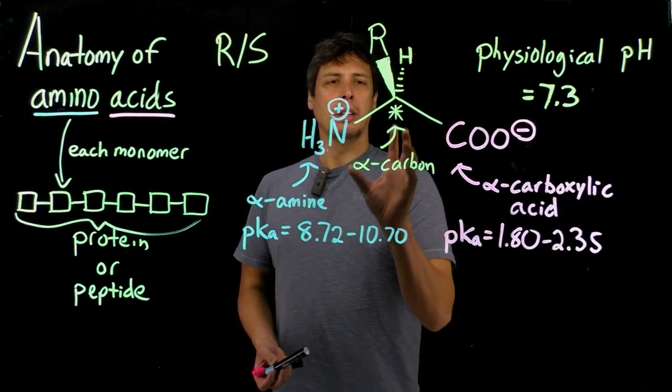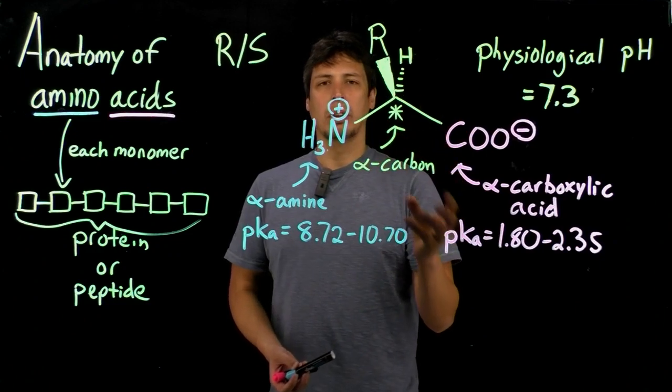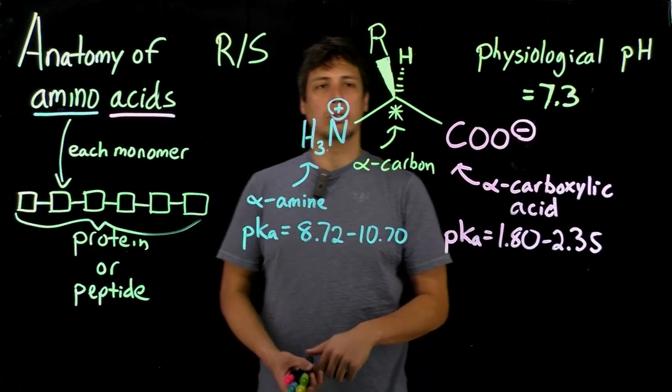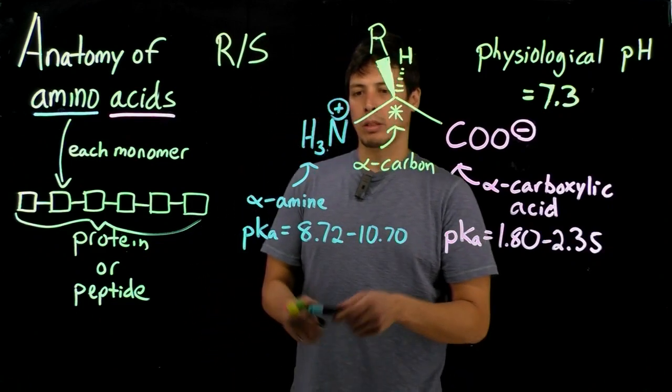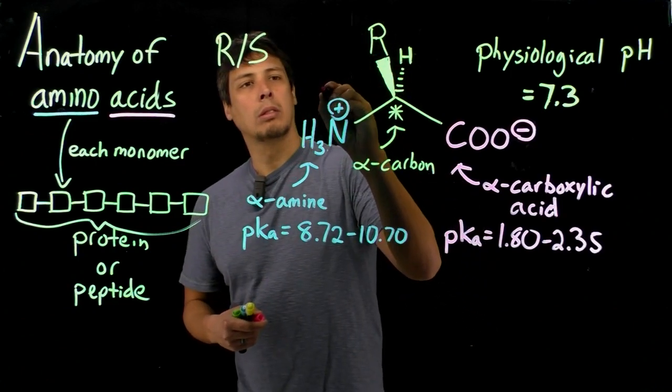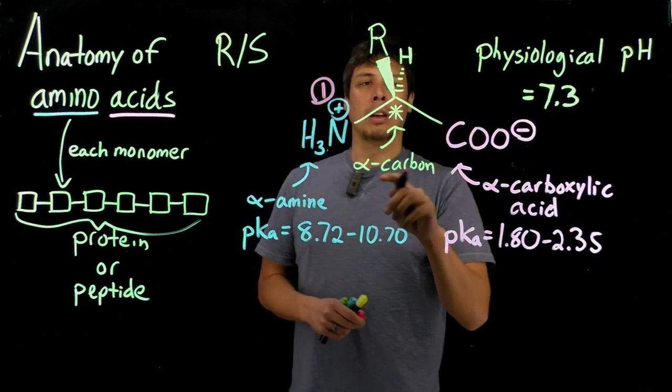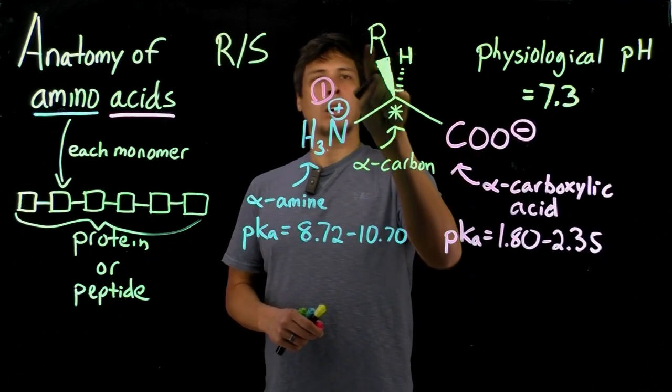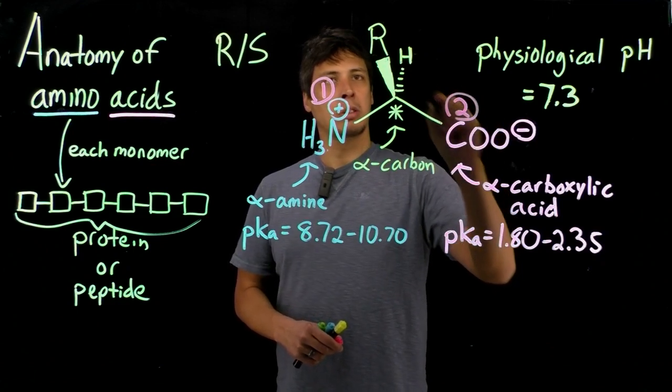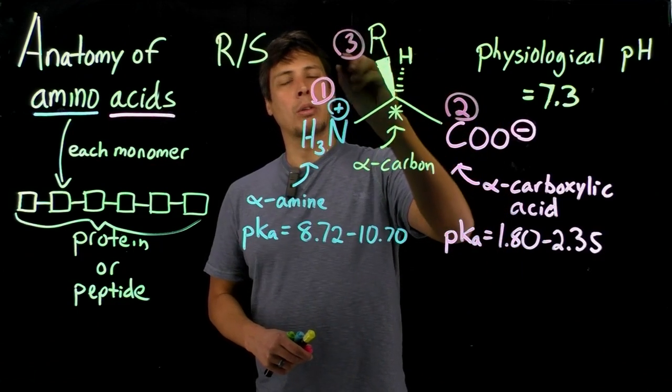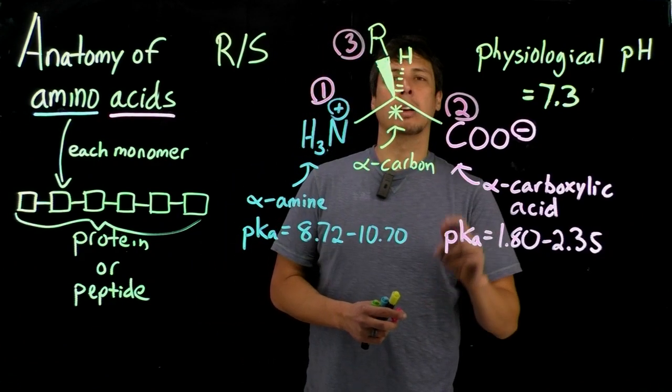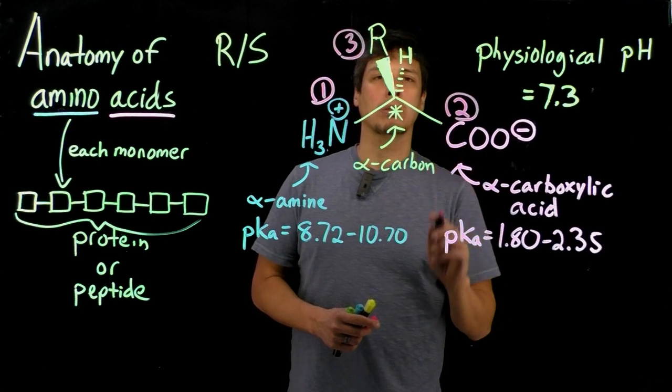So on the chiral carbon we need to assign priorities to each of the groups attached to the carbon. And so the highest priority will go to the atom that has the highest molecular weight. So hopefully this is starting to ring a bell. So this one will have one, alright. And then we're going to have two carbons here, and I won't go into the details right now, but this is going to have a priority of two, and this one will have a priority of three more often than not. Just a little bit of foreshadowing for when we get to the actual structures of the amino acids.